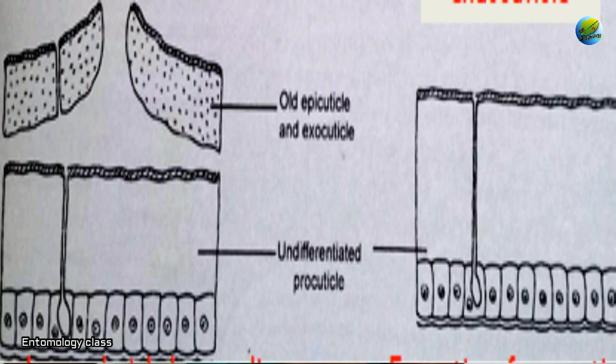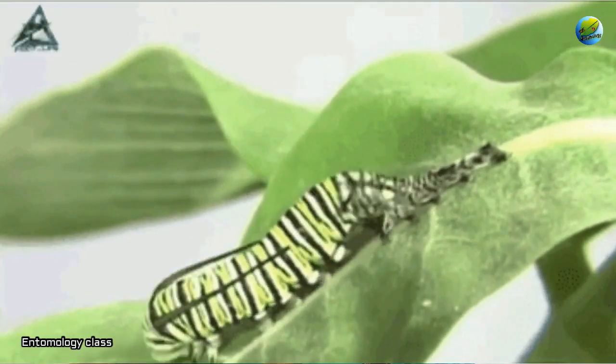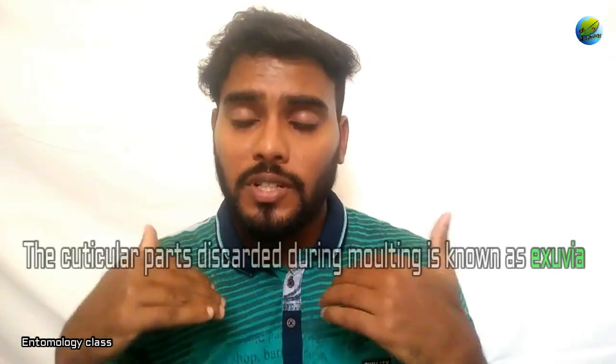The procuticle forms below the cuticulin layer, which is part of the new epicuticle. After the components of the epicuticle are secreted by the epidermis, they are shifted to the epicuticle using the pore canals in the procuticle. When the new exoskeleton is formed, the insect starts to contract its muscles and takes in excess air, causing the body to remove the old exoskeleton. The old exoskeleton that is shed is known as the exuvia and the process is known as ecdysis.